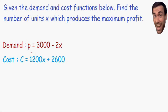Let's take a look at these two functions which are given to us. The demand function tells us the price of the product — that's why it's labeled with a p. The demand is the price of the product based on how many units x are available. Notice the higher the value of x, the lower the value of p is going to be, which makes sense because the higher the supply, the lower the price of the product is going to be. So this demand function is just another way of expressing price.